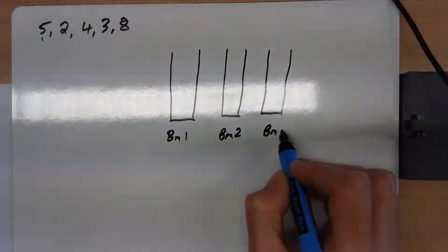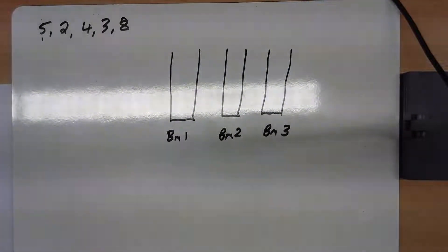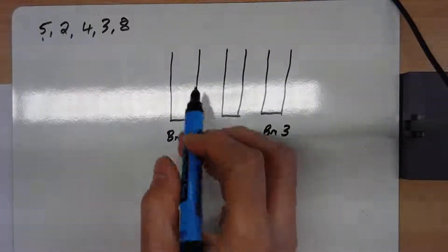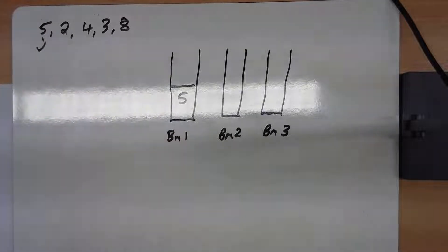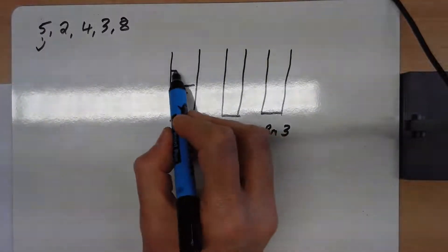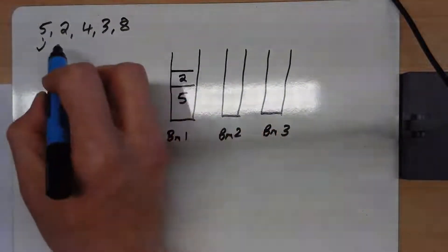Each bin can fit a maximum of 10. You take the 5 and put it in the first one available, there it is. Now here comes a 2, and we'll stick that one in there as well.